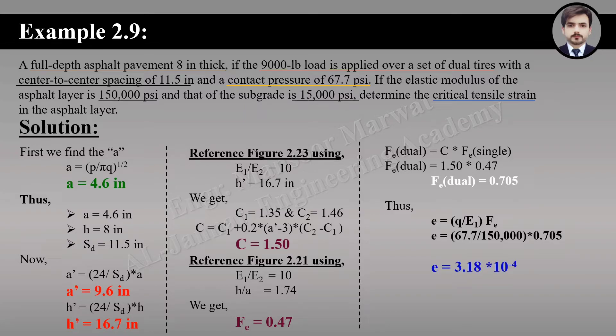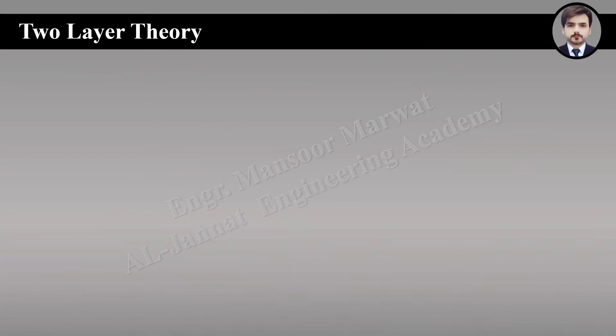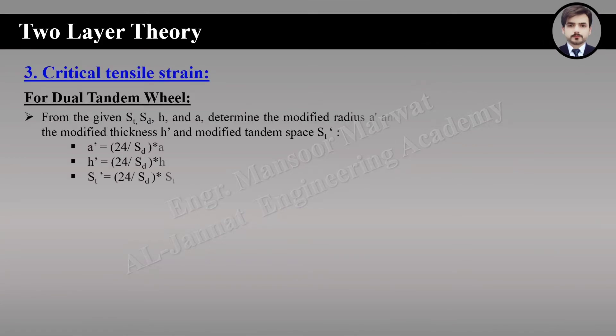By putting the dual wheel strain factor into the critical tensile strain equation, we get epsilon equals 3.18 × 10⁻⁴.